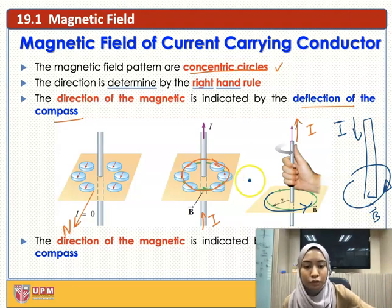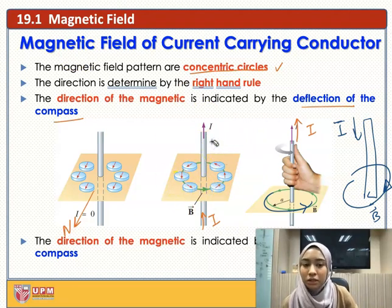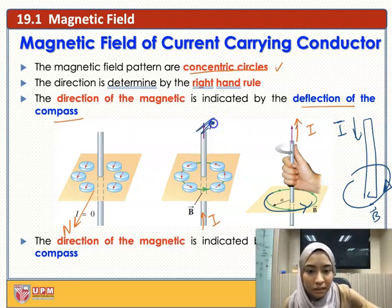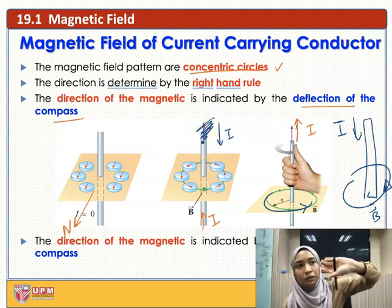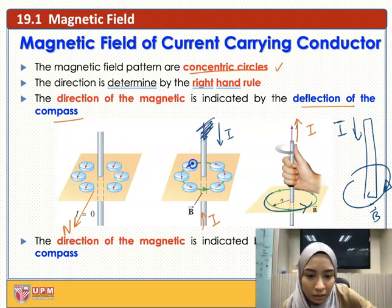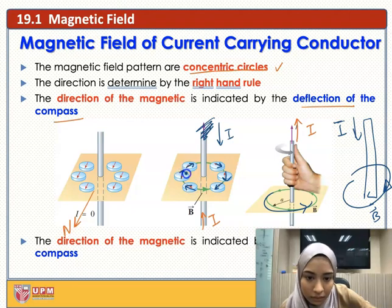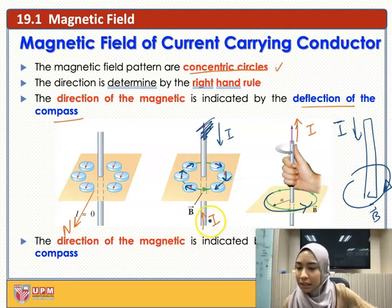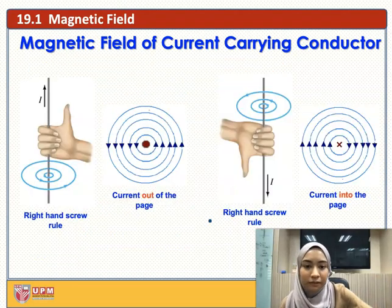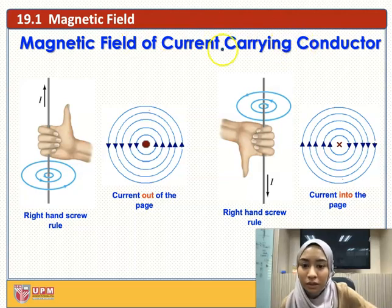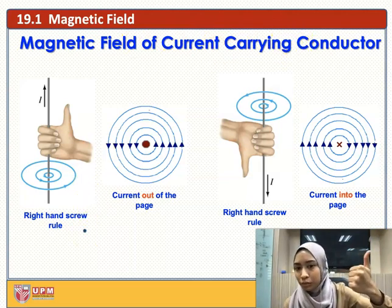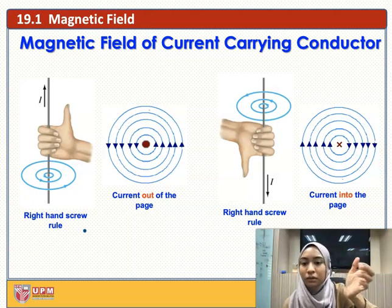If you test this with a compass around the conductor, the compass will deflect in the direction of the magnetic field. For current going down — curling clockwise — the compass will point in the clockwise direction. The direction of the magnetic field is indicated by the direction of the compass needle. This is the magnetic field of a current-carrying conductor using the right-hand rule, also called the right-hand screw rule.